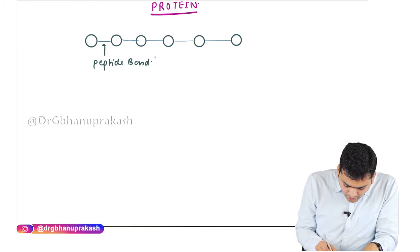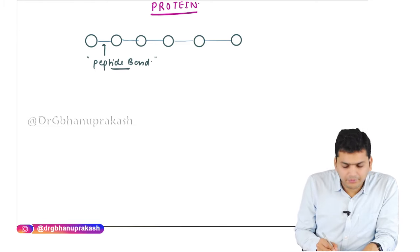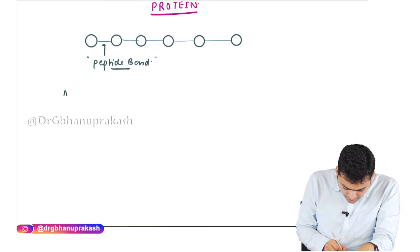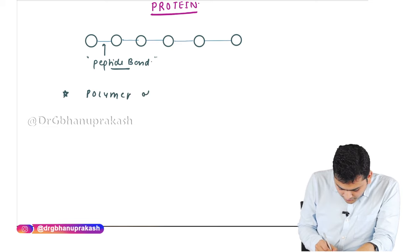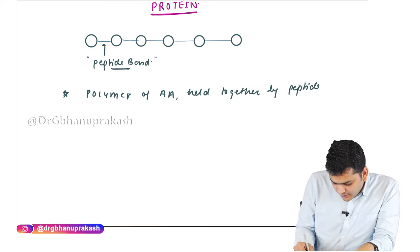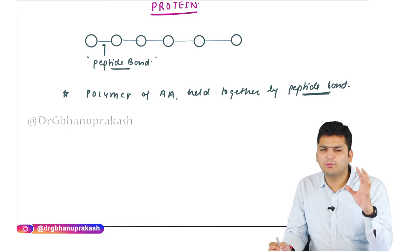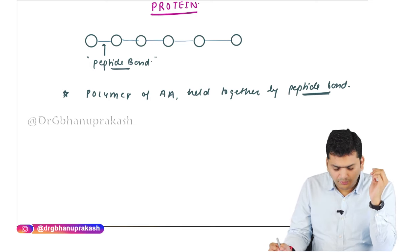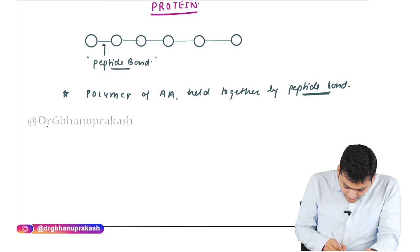The peptide bond is a covalent bond and it is a very strong one. So the definition of protein is: it is a polymer of amino acids held together by peptide bonds. This is the simplest structure of a protein — there is only one type of bond, and that is the peptide bond.